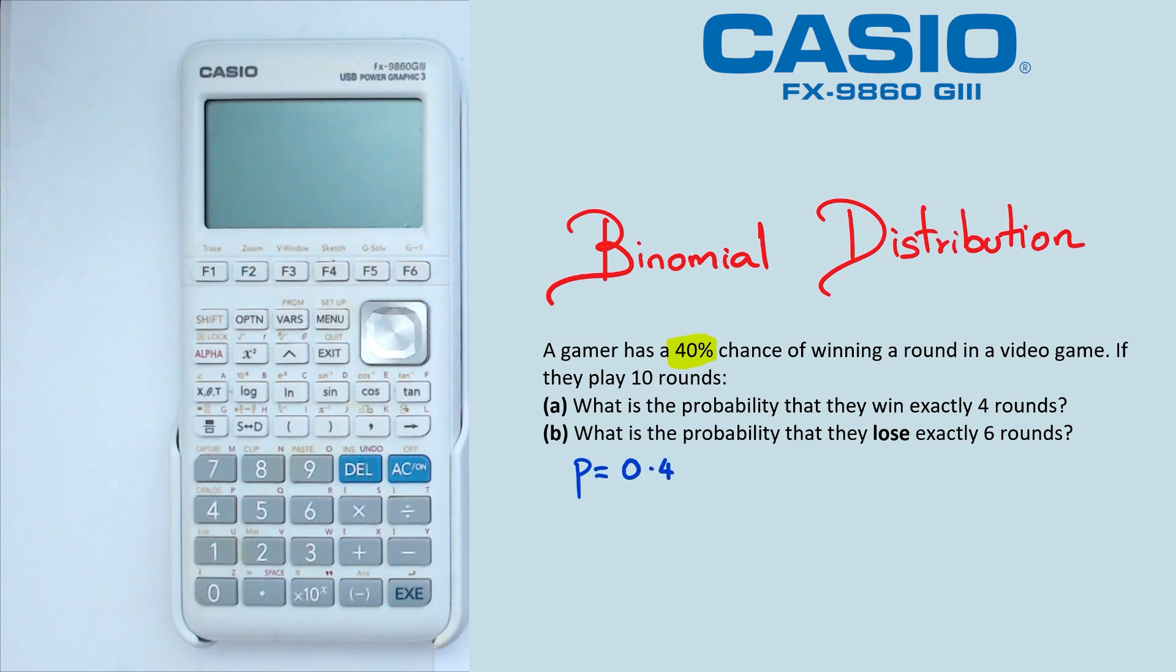Next we have, they actually play 10 rounds, so that's number of trials is equal to 10. And if we look at question A, we are looking for the probability of winning exactly four rounds. So that means probability of x is equal to 4.